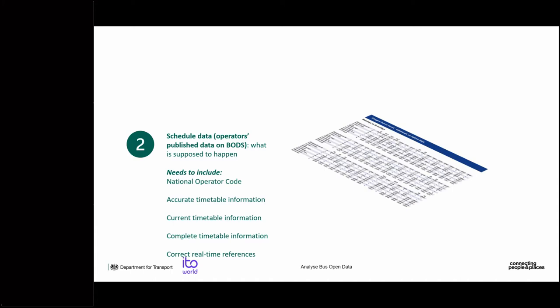For schedule data, national operator codes must be included so the system knows which operator it belongs to. The timetable information needs to be accurate, current, and complete. If expired or old timetable information is on the service, the resulting analysis won't be accurate. Real-time references in the feed need to match those in the timetable information provided.